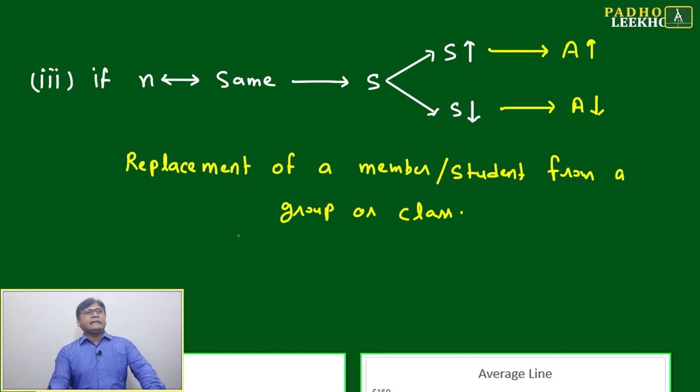The third situation: if n is the same, n is not changing. Earlier maybe n equals 10, now also n equals 10. But what is happening here is s is increasing.